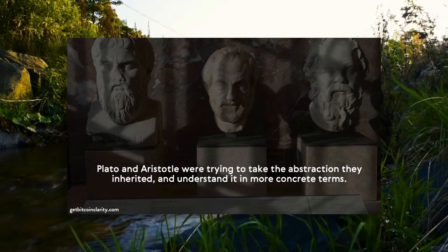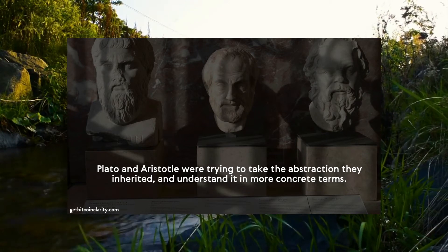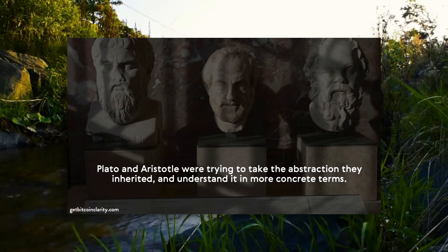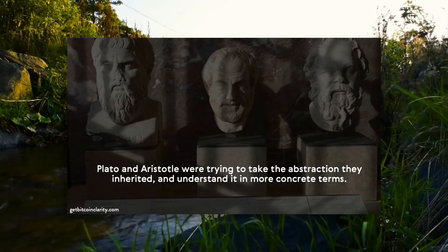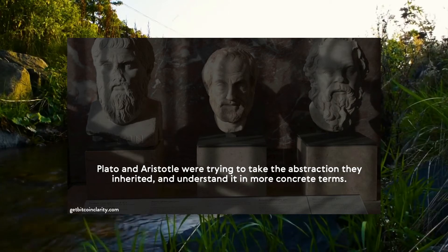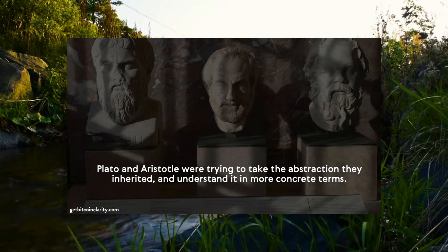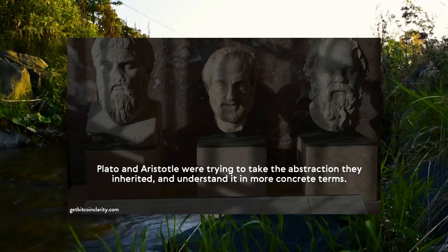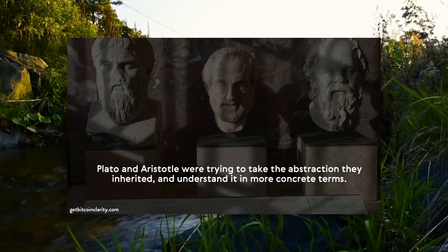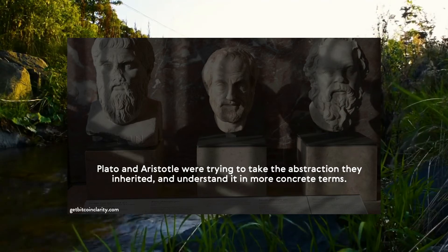Plato and Aristotle were trying to take the abstraction they inherited — the black box — and understand the system in more concrete terms. The early Greeks were scrutinizing the black boxes around them, trying to understand what light was, where it came from, what it meant. They started with the very abstract idea that light is 'a bridge between this world and the next,' and without getting into relativity, it sort of is. But things start out very abstract and move into more concrete terms — that's the progression of science.